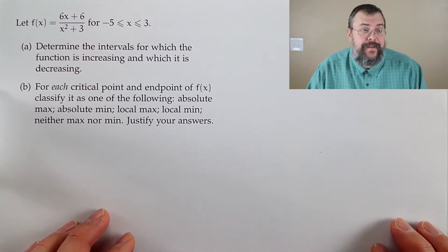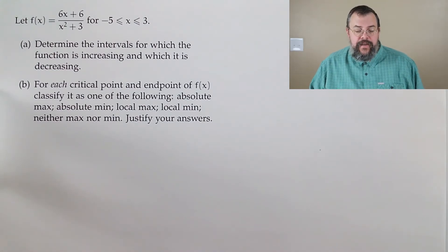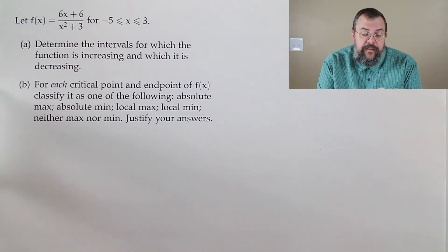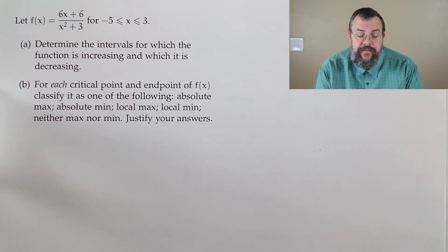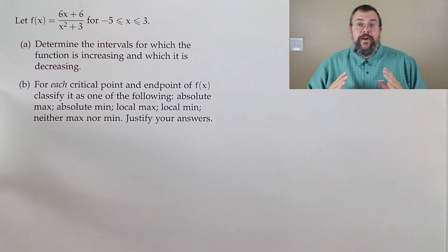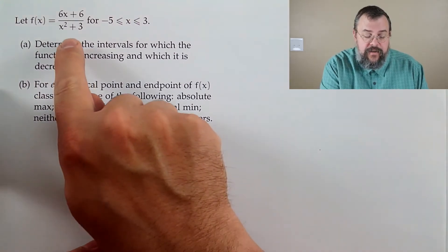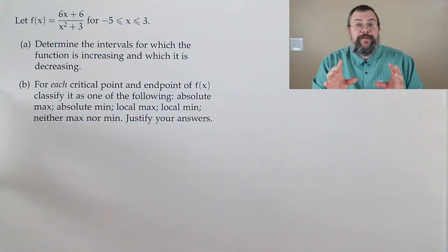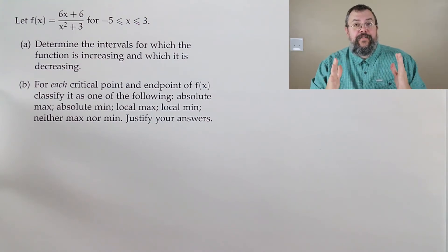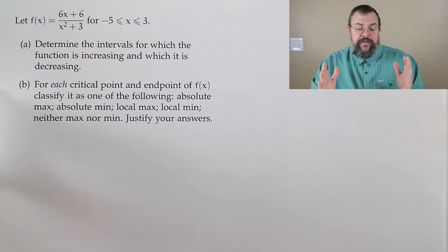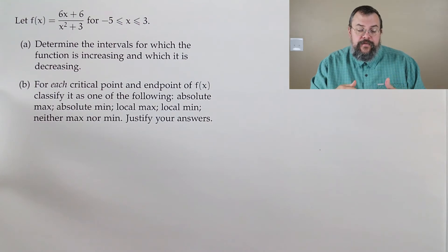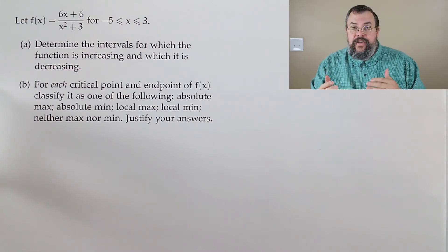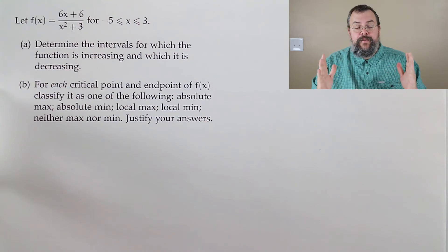Our next problem: the function is f(x) = (6x + 6) divided by (x squared plus 3), on the interval negative 5 to positive 3. Note that x squared plus 3 is always positive, so the function is defined everywhere, but we narrow our focus to this interval. Part A: determine the intervals for which the function is increasing and which it is decreasing.